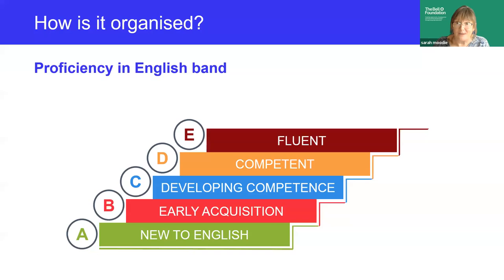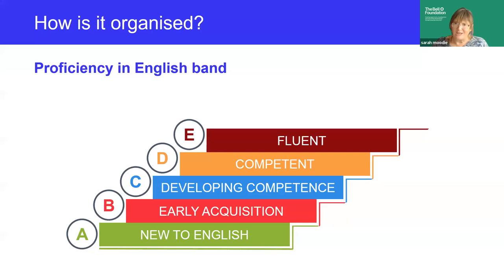The EAL assessment framework assesses learners in five bands — A through E — going from new to English up to fluent, and it's freely available on the Bell Foundation website. Learners don't always fit neatly into one band, and neither do activities and strategies. So you'll find it useful to read suggestions for the bands below and above the one at which your learner is currently working. Some suggestions are relevant for more than one band. In many classes, of course, you'll have learners at different proficiency bands all in the one class, so it's a question of reading around the different strategies and deciding what works for your context.